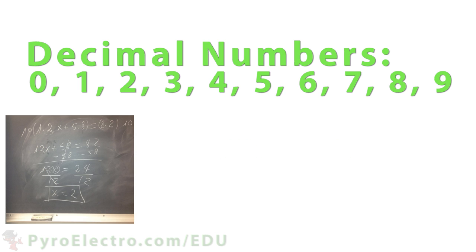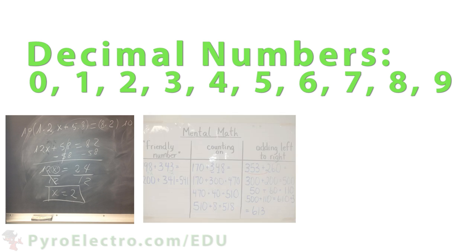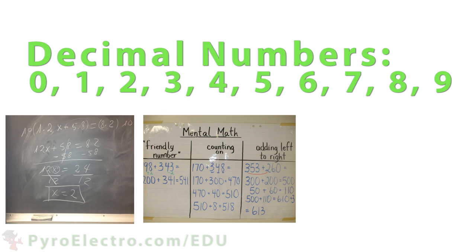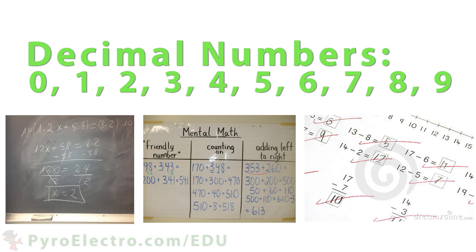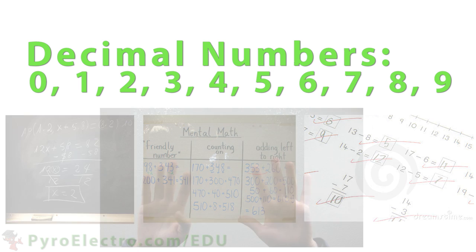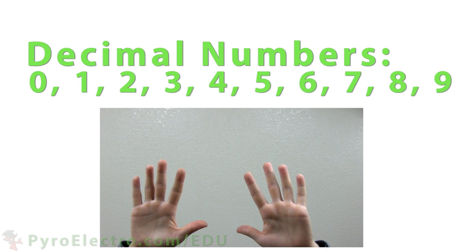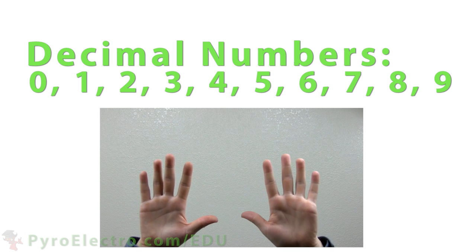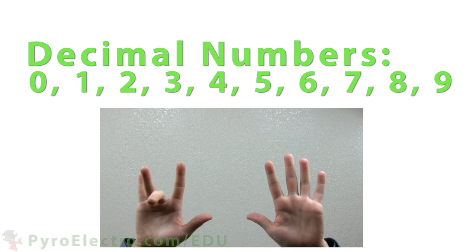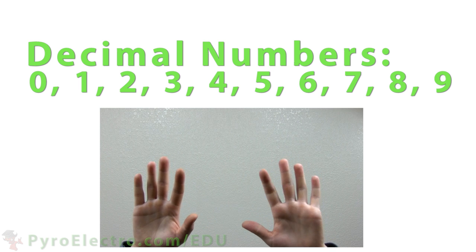The most common number system in the world is by far the decimal number system. This is what we all learned when we first studied math at primary school or even before that when we were babies and simply learned to count. The decimal number system has ten numbers, zero, one, two, three, all the way up to nine, and we call this type of system a base ten number system.